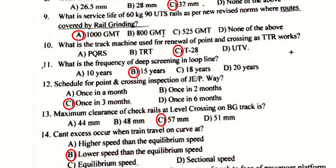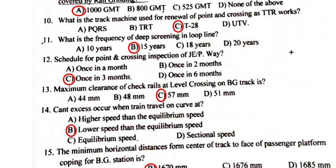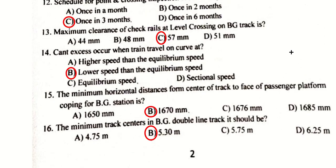This schedule is done in rotation with the in-charge ploy. The maximum clearance of check rail at level crossing on BG track is 57 mm. Excess cant occurs when a train travels on a curve at a lower speed than the equilibrium speed — option B.